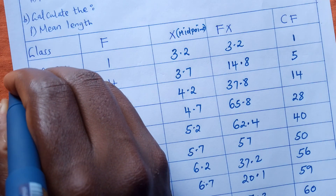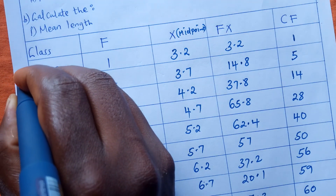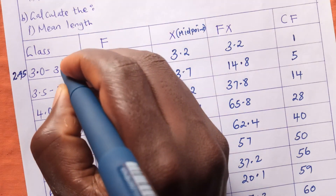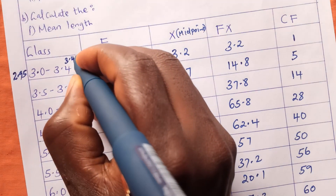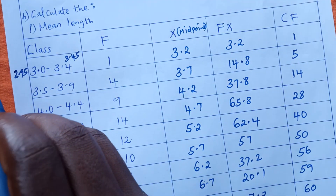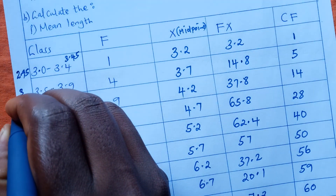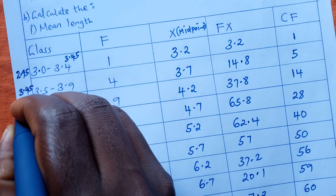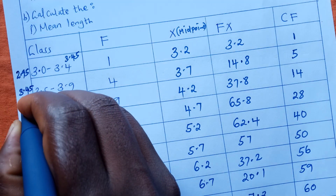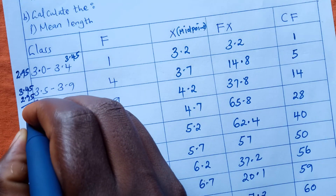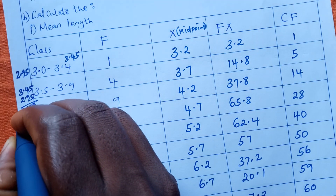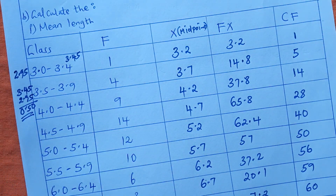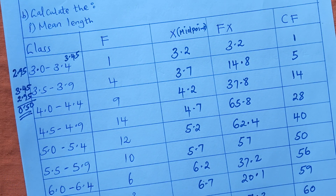The least value we can read is 2.95 and the highest is 3.45. Subtracting 2.95 from 3.45 gives us 0.5. So our class interval is 0.5.